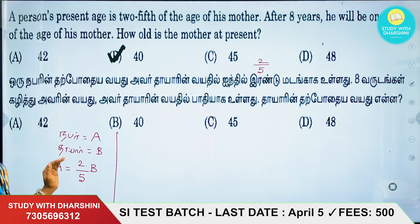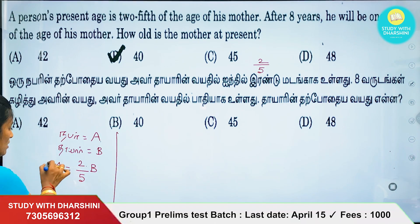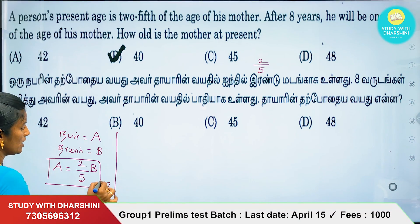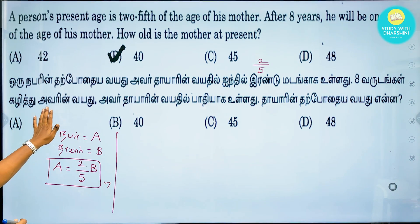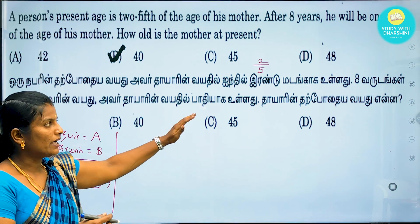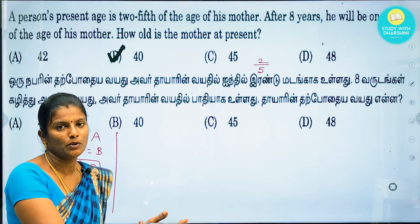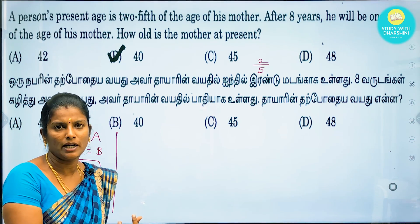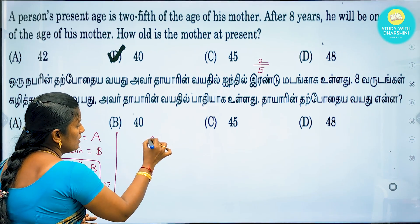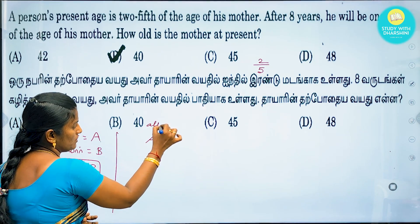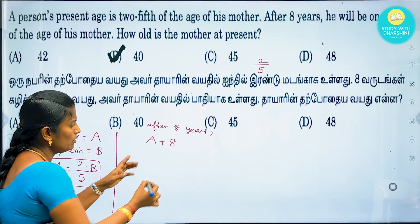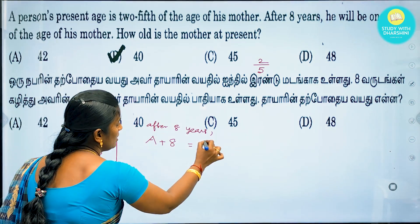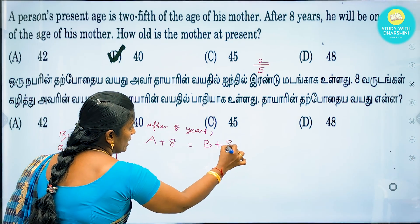We can also multiply the number. Now let's check the first equation and find the values. Let's say the answer is the reason. The answer is 8 minus 1. After substituting, the answer is a plus 8 and the answer is a plus 8.